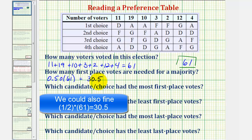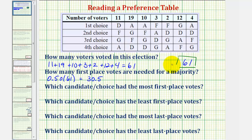Of course we can't have a fractional part of a vote, and also a majority is more than half, and therefore we have to round this up to 31. Therefore, 31 first place votes are needed for a majority.